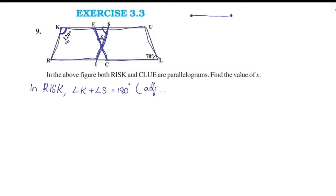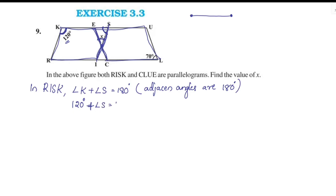Adjacent angles in a parallelogram are supplementary — that is 180 degrees. Angle K is 120 degrees. So 120 degrees plus Angle S equals 180 degrees. Therefore Angle S equals 180 minus 120 equals 60 degrees.